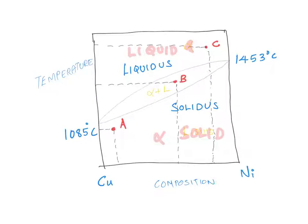The first thing we are going to do is understand what are the different phases present in the system. I have shown here three different points A, B, and C. Once I know the composition of my alloy and the temperature at which it is situated, I can fix these points at three different compositions and three different temperatures. Looking at point A, how many phases are present? It is a single phase - the alpha solid solution of copper and nickel.